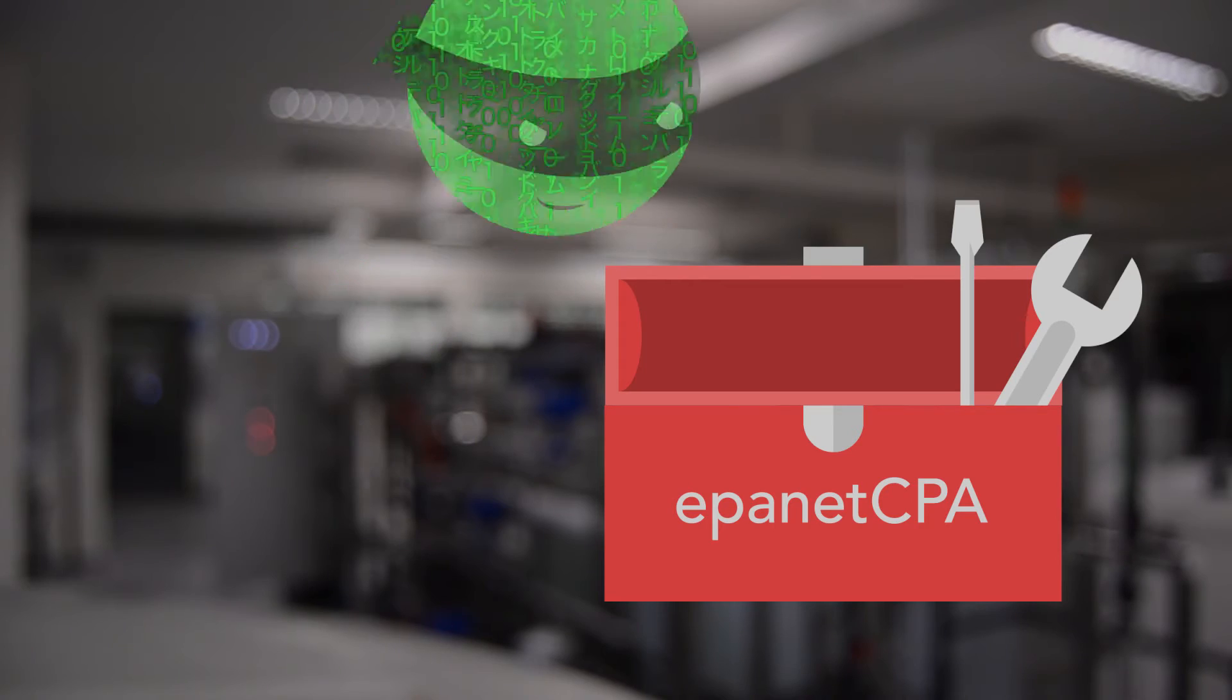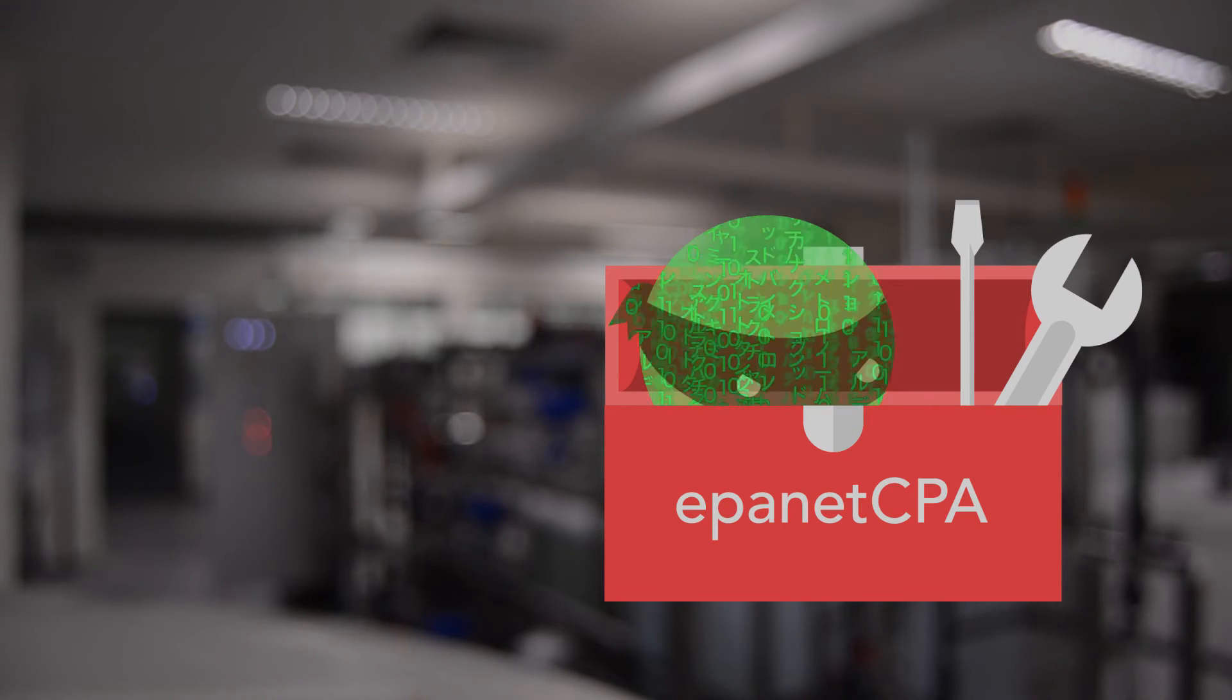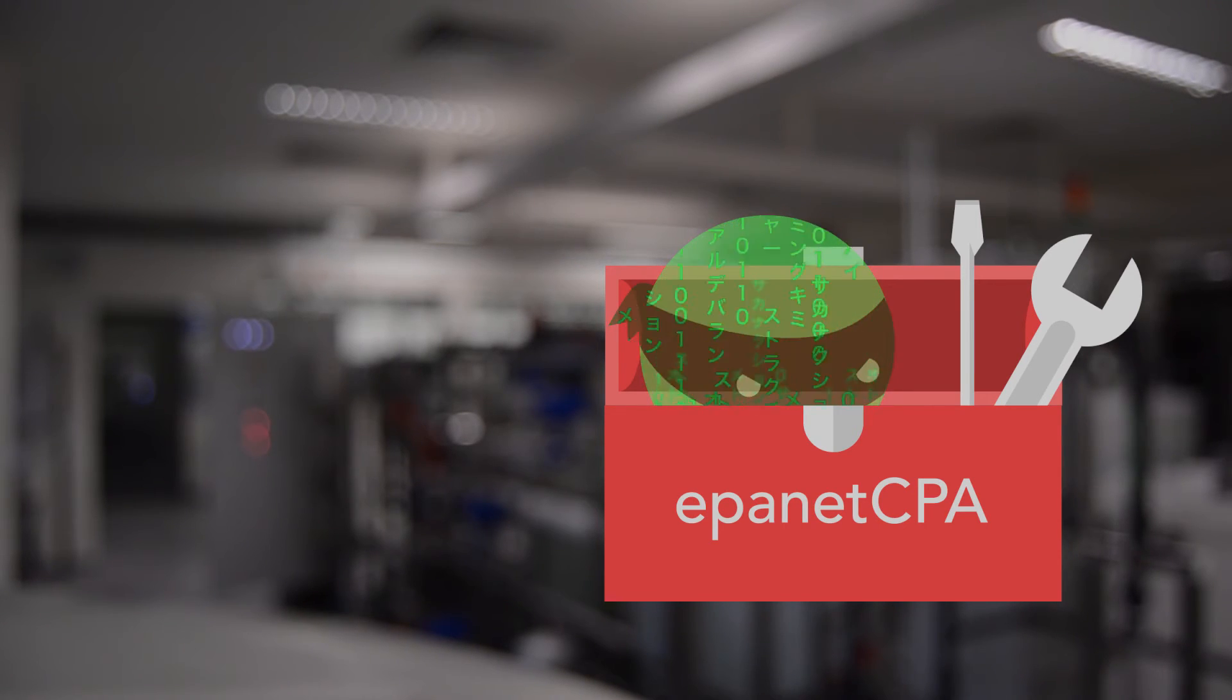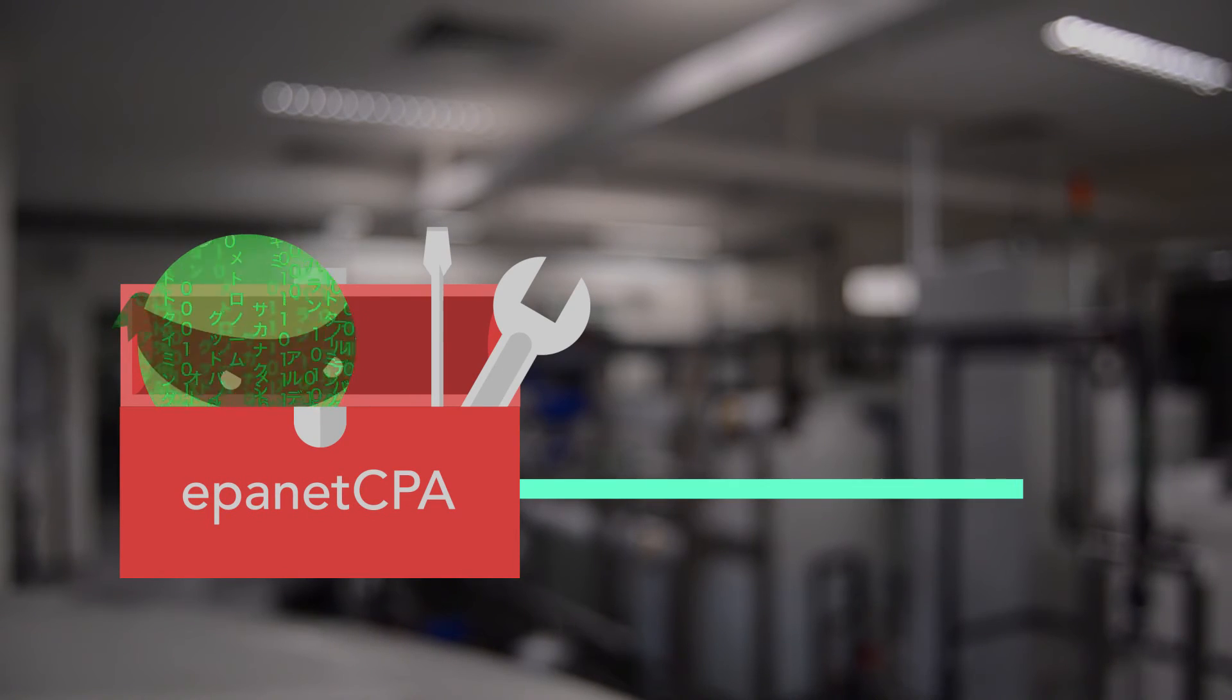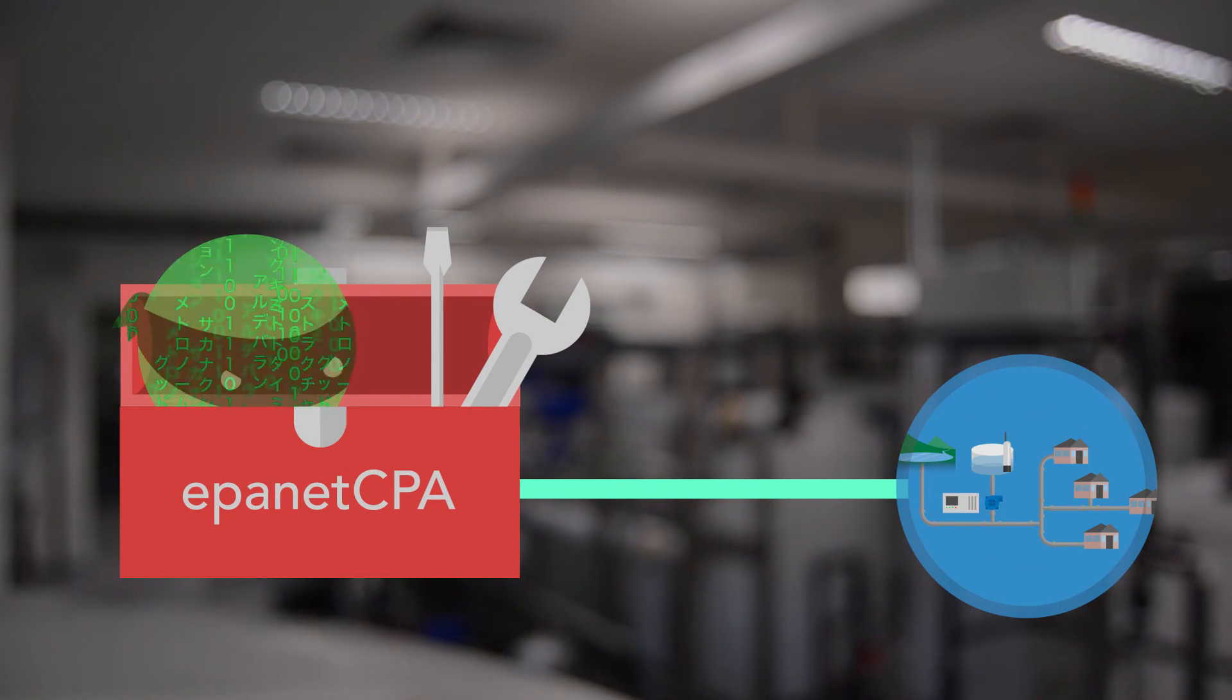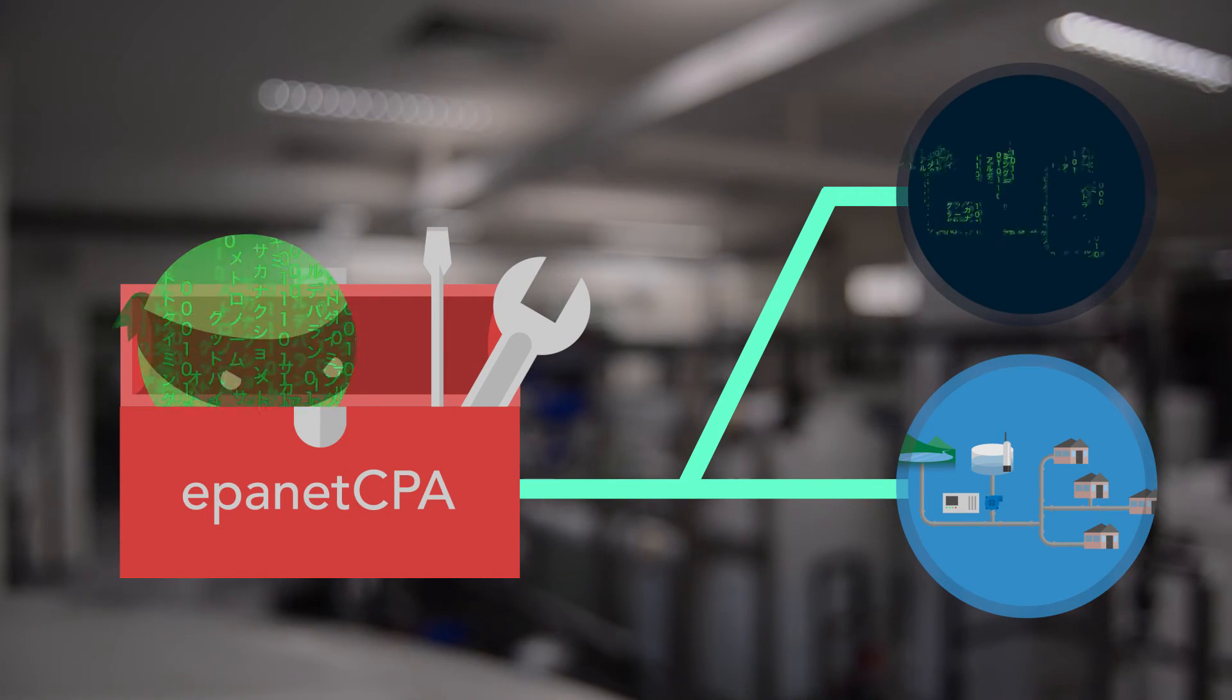This toolbox takes the attack model and automatically runs it in EPA-net, which is an industry standard software for modeling how water flows through distribution systems. The EPA-net CPA toolbox keeps track of both the actual physical status of the system, and the reported cyber status of the system, which may have been changed by a hacker.